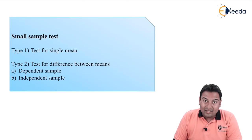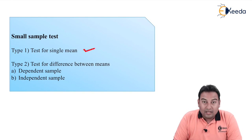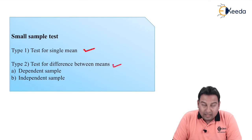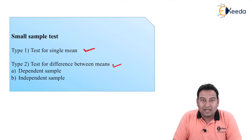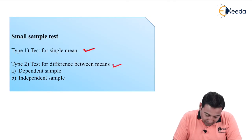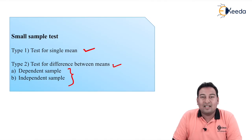So again, here also there are two types: test for single mean and test for difference between means. But here, type 2 is further divided into dependent sample and independent sample.